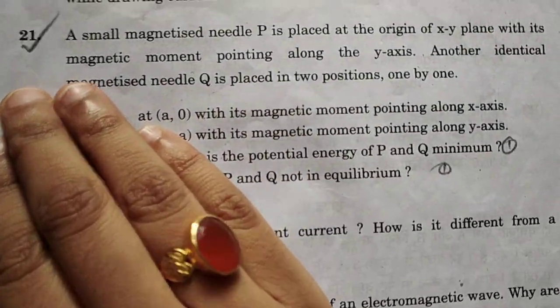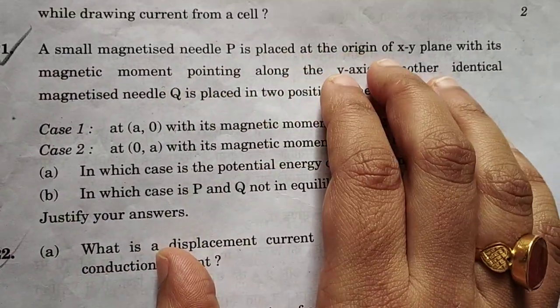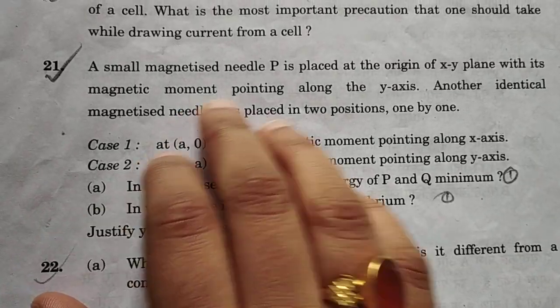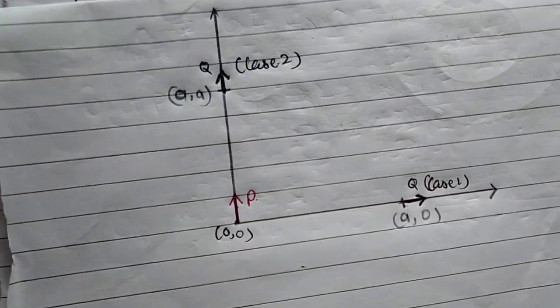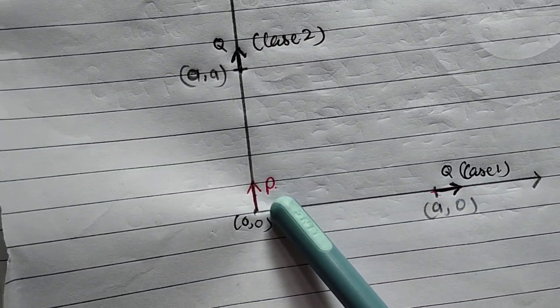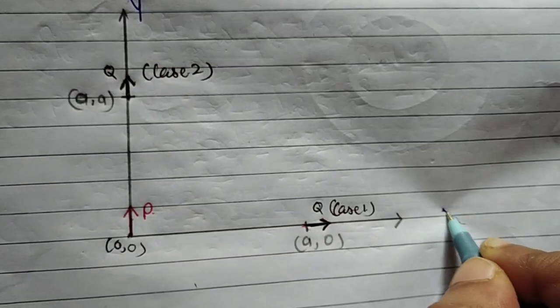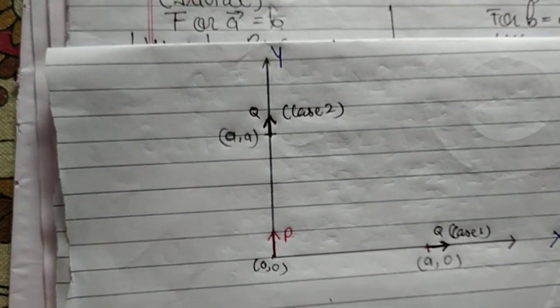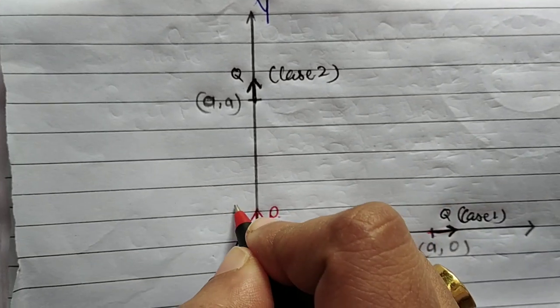Good morning students. Next question: a small magnetic needle P is placed at the origin of the xy-plane with its magnetic moment pointing along the y-axis. We have a magnetized needle P with its magnetic moment along the y-axis. This is my y-axis and this is my x-axis. The magnetic needle has its magnetic moment in this direction.